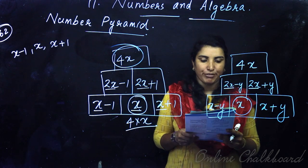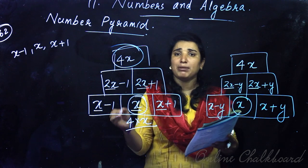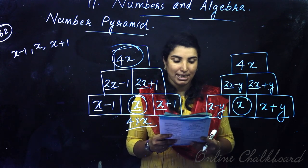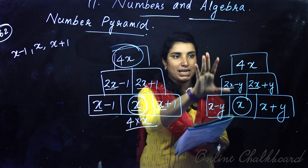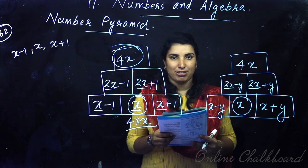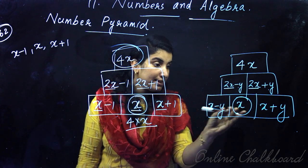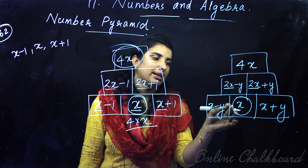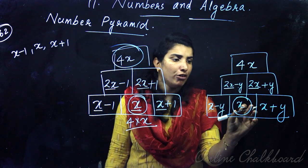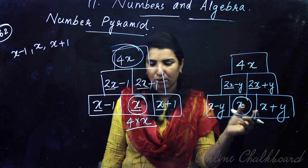Can you write the specialty of the last pyramid in ordinary language? Ordinary language means that we can explain in English. Among these three numbers x minus y, x, x plus y, the topmost number is 4 times its middle number x.